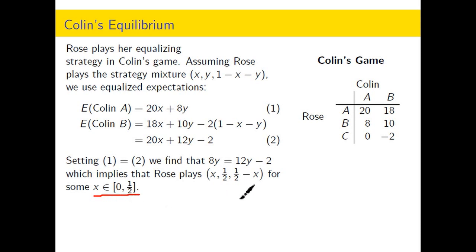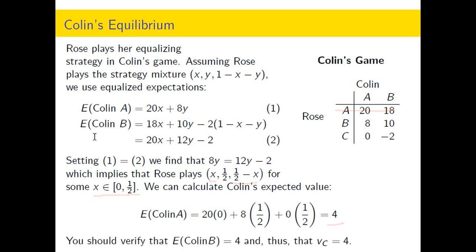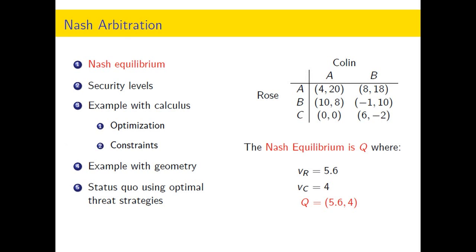Since Rose is the minimizing player, she will not play a strategy like Rose A, so she sets X equal to 0, making (1/2 minus X) equal to 1/2. Once we have those strategies, we calculate the expected value of Colin A and find that the y-coordinate of the Nash equilibrium is 4. You should double-check that it also works out to 4 when you plug in values to the expected value for Colin B.